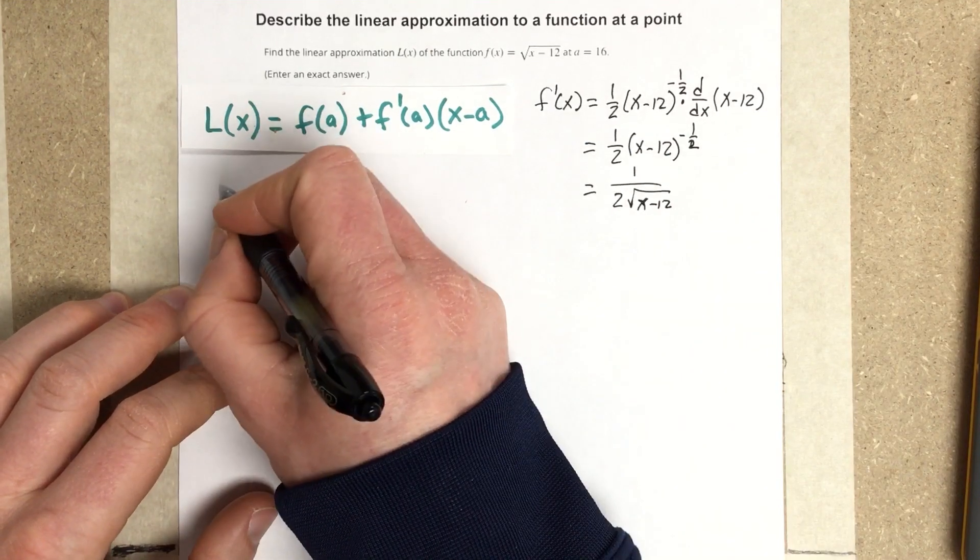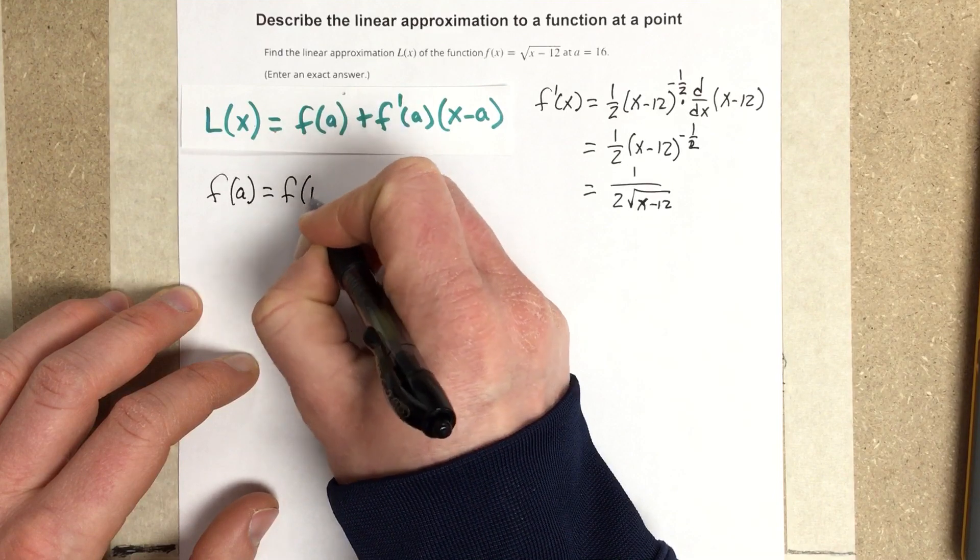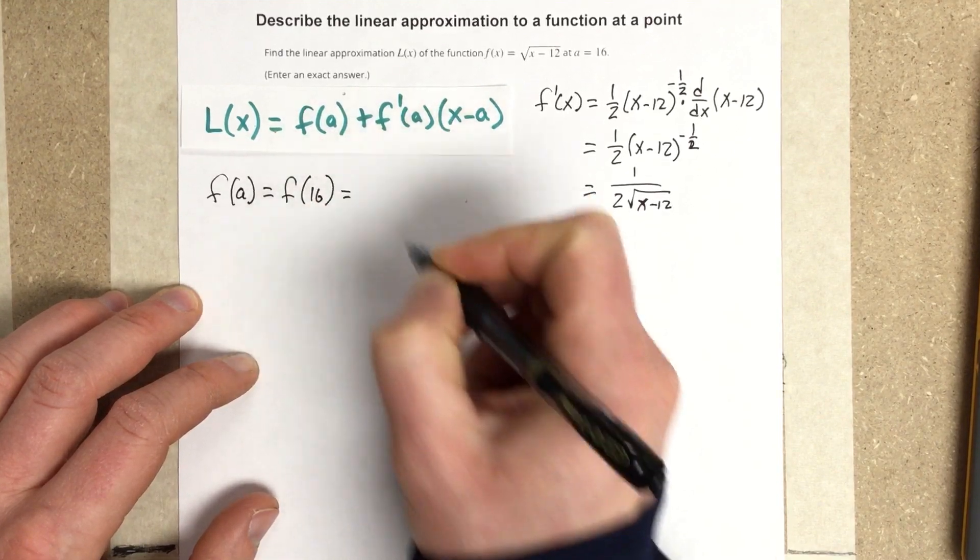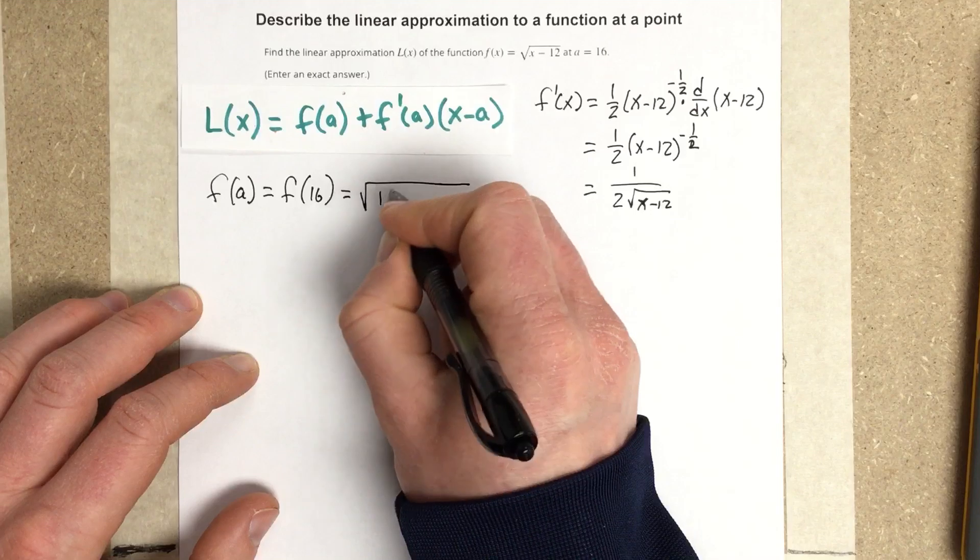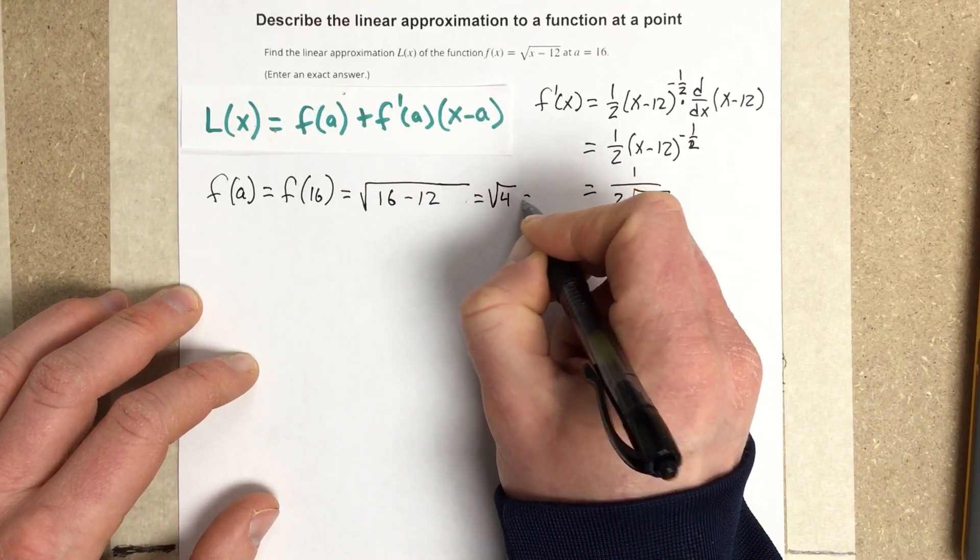So I'm going to go ahead and find f of a now. f of a is equal to f of 16, which is equal to root 16 minus 12, which is equal to root of 4, which is equal to 2.